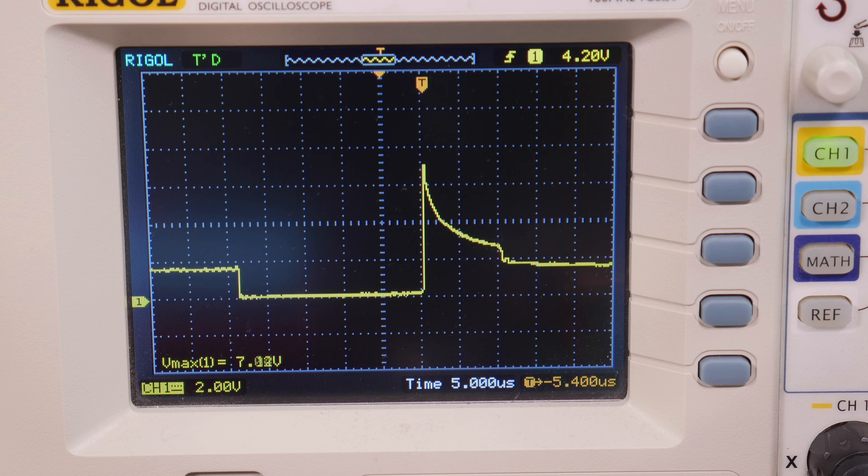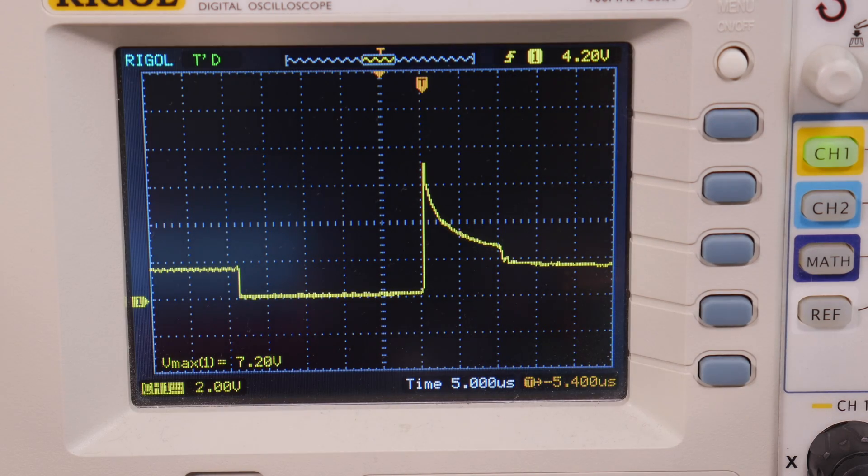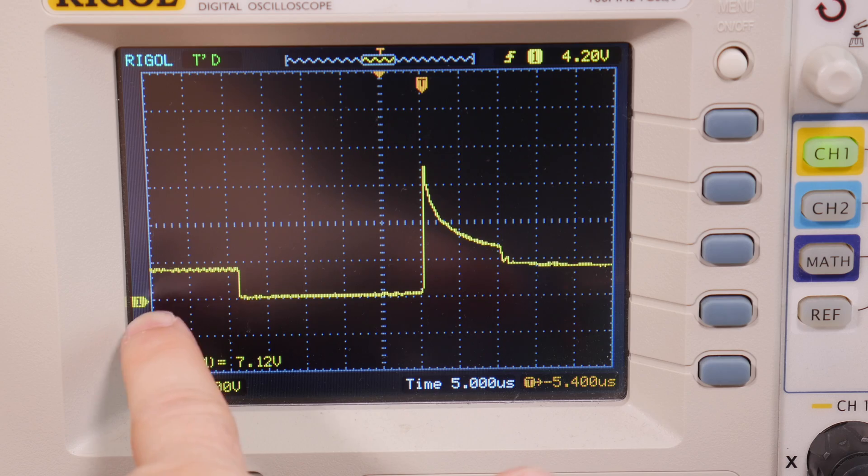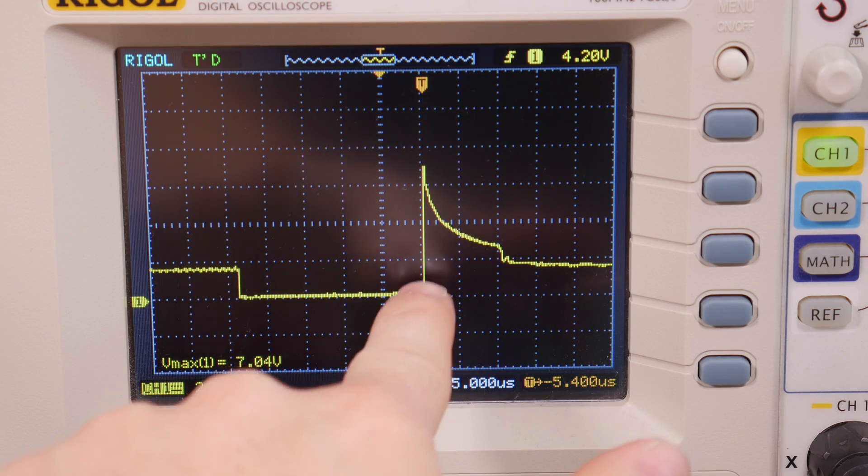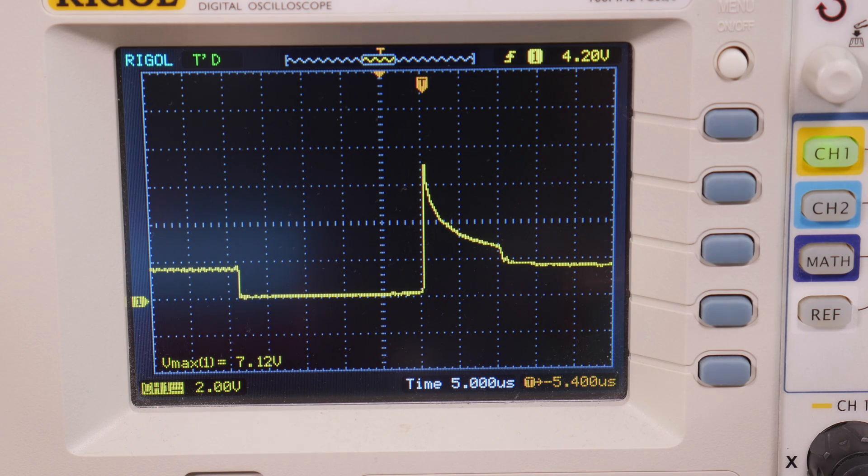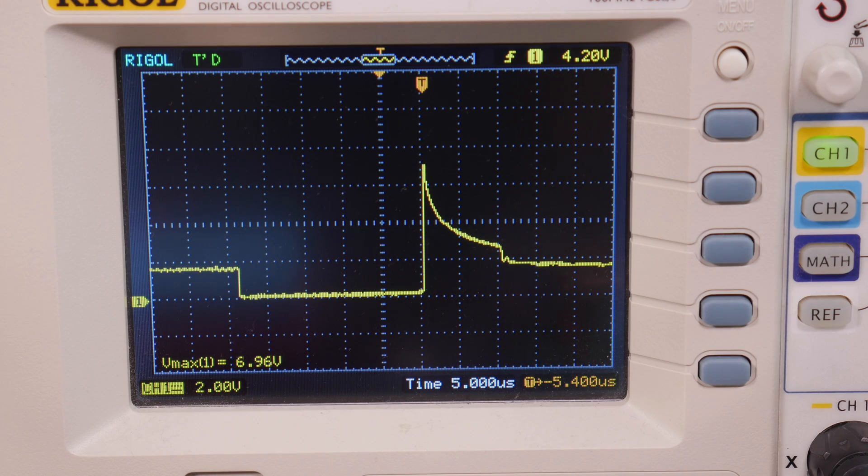One thing that's noteworthy is just how high of a voltage spike this is. The forward voltage of an LED is typically around 3 volts. You'll see here that our V max is somewhere around seven and a quarter. We're at two volts per division. So it's about seven volts exactly as the scope is measuring. This circuit is actually forcing about seven volts across the LED, which means we're pushing a lot of current through it for just a very short amount of time.